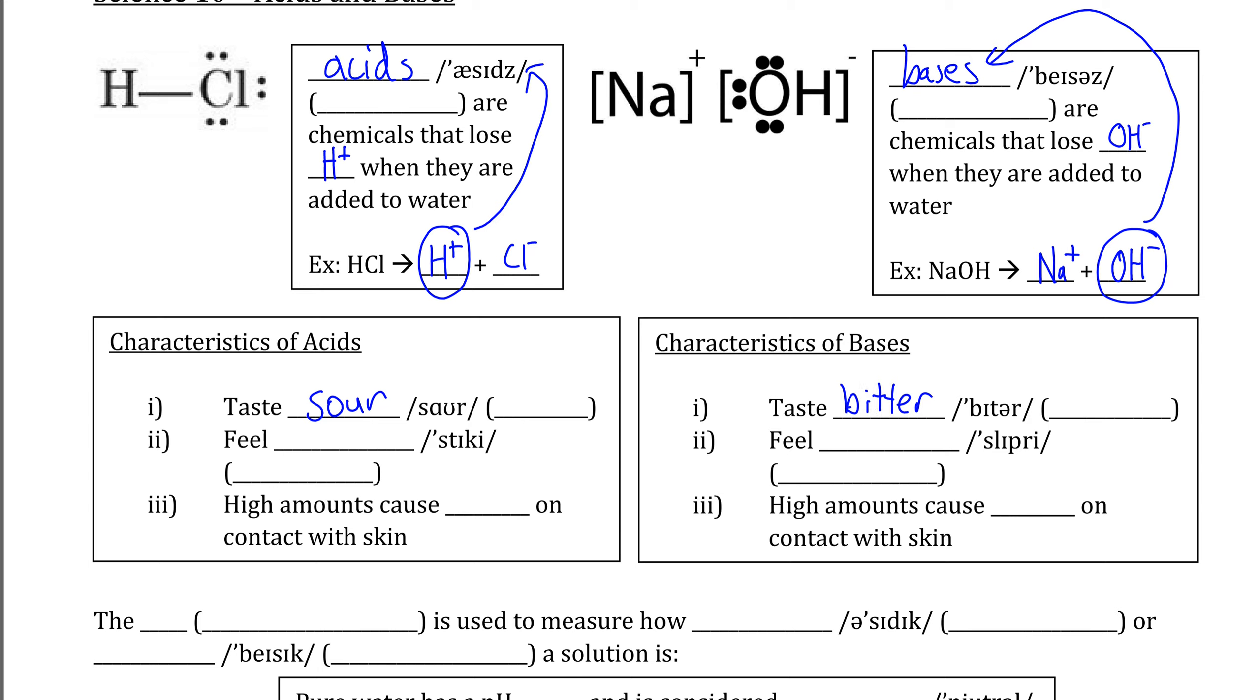Many bases are very deadly poisons, but there are some bases that can be consumed in small amounts and usually have a bitter taste. A common example of an acid is lemon juice or juice from citrus fruits. If you get this on your hands, you can feel that it feels very sticky. A common example of a base is hand soap, which feels slippery when touched.